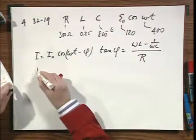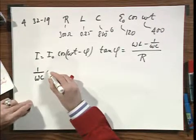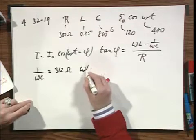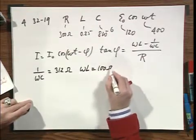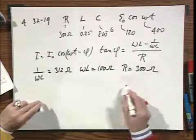Now it's interesting to write down the reactances of the three components. It's 312 ohms for the capacitor, 100 ohms for the self inductance, and 300 ohms for the resistor.